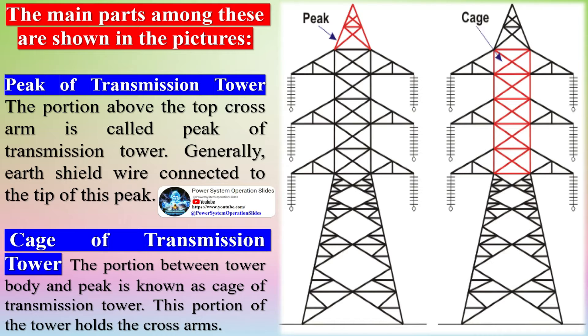The main parts are shown in the pictures. The peak of transmission tower is the portion above the top crossarm. Generally, the earth shield wire is connected to the tip of this peak.